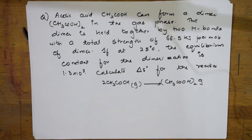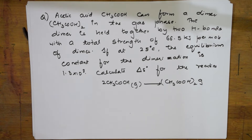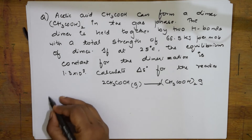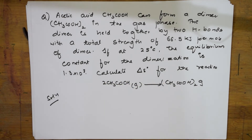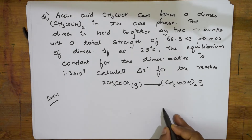Students, let us come back and do the numerical which is a JEE Advanced numerical based on the concept of Gibbs free energy as well as standard Gibbs free energy. They have given us acetic acid can form a dimer — we have already seen it forms a dimer. Let us write first of all how it forms a dimer.